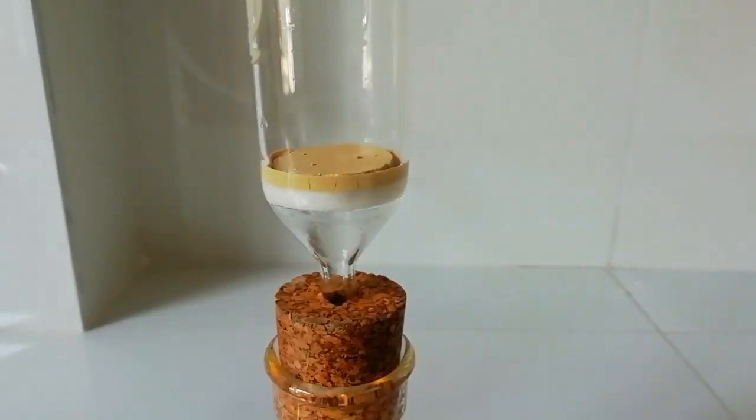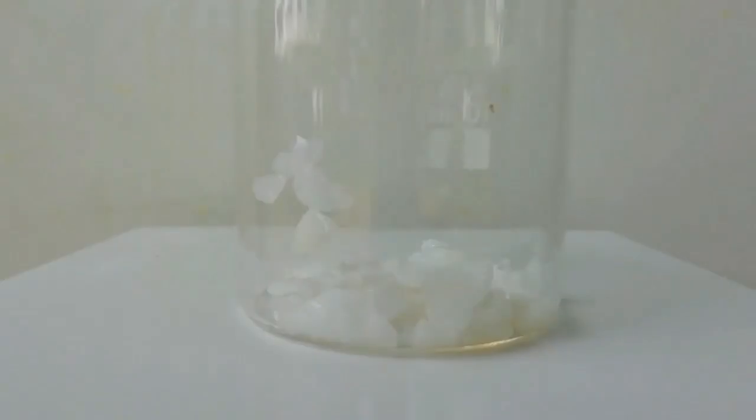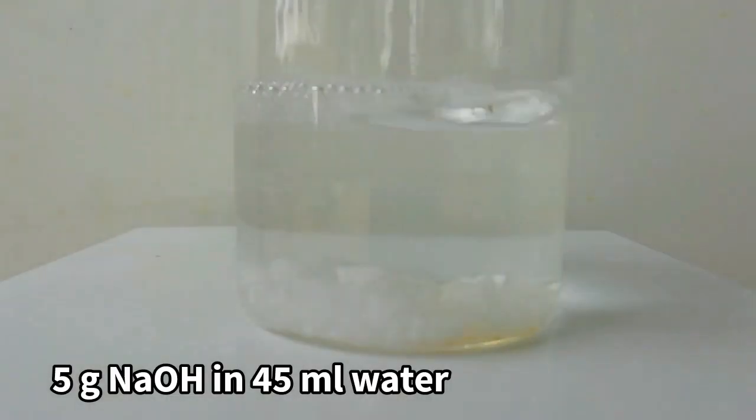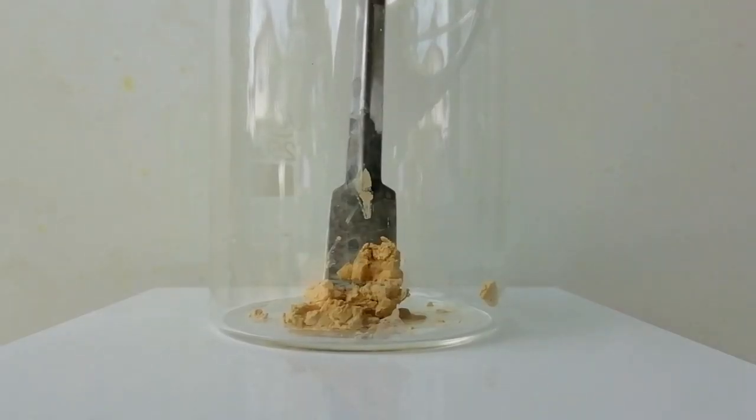Then to convert nitrate group to amine group we need to dissolve the precipitate. For that I prepared 10% sodium hydroxide solution by dissolving 5 grams of sodium hydroxide in 45 ml of distilled water. When the precipitate dissolved in sodium hydroxide the solution turns into red color.